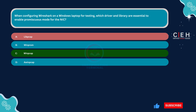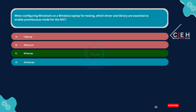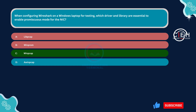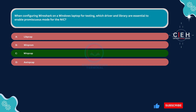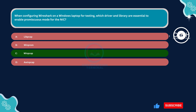Option A, libpcap, is incorrect. Libpcap is a library used on Unix-like systems, such as Linux and macOS, for capturing network traffic. It is not typically used on Windows systems. Option B, winprom, is incorrect. Winprom is not a known or widely used library or driver for capturing network traffic on Windows systems. It appears to be a fictitious option. Option D, awinpcap, is incorrect. Awinpcap is not a recognized library or driver for Wireshark or network traffic capturing on Windows systems. This option seems to be a misinterpretation or variation of WinPcap.